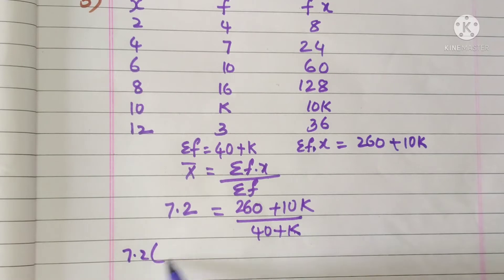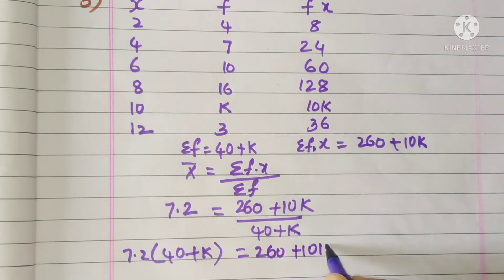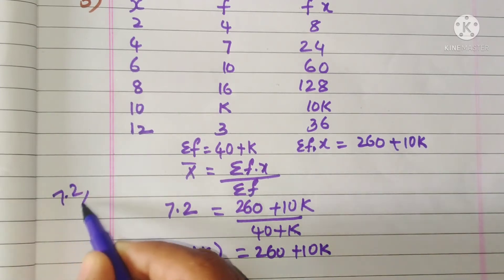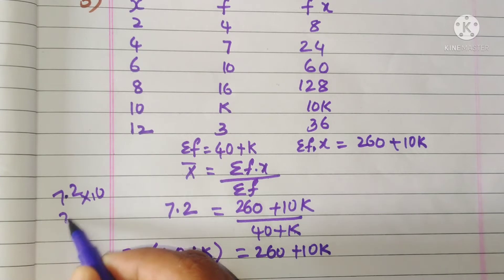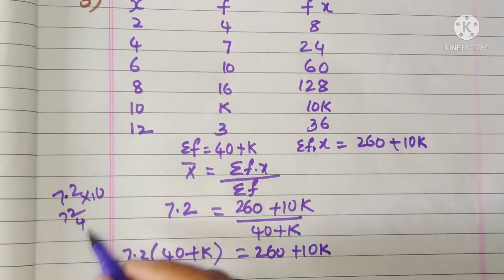So 7.2 times (40 plus k) equals 260 plus 10k. 40 means 4 into 10 only. If we multiply 7.2 with 10, the point will remove, it is 72. Now 72 fours are 288.